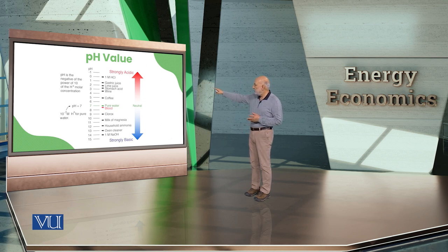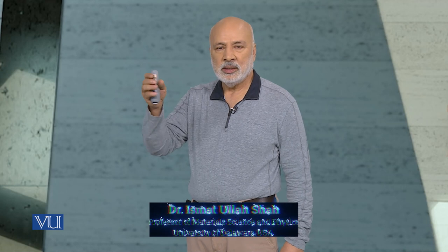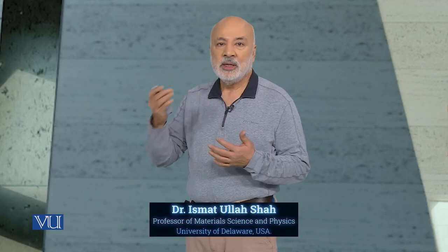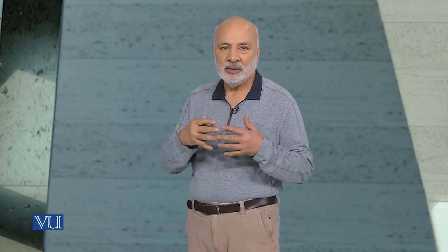Now you can see familiar things on the scale. Milk of magnesia — people are very confused about this. It is a white-colored solution of magnesium hydroxide, and it is basic, around pH 12.